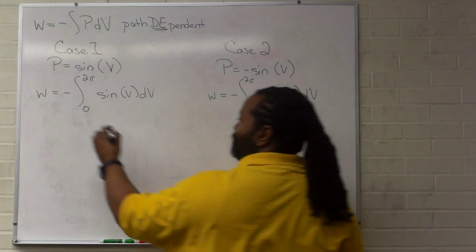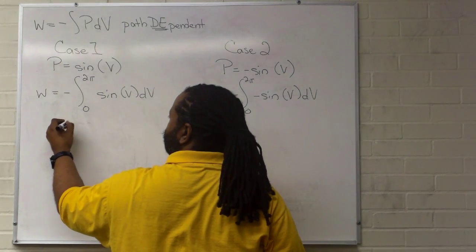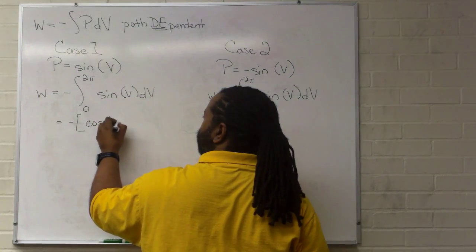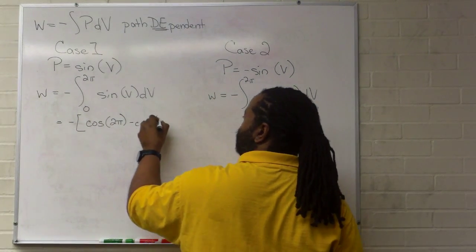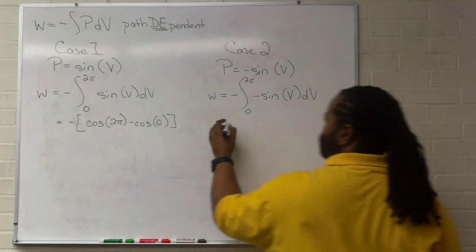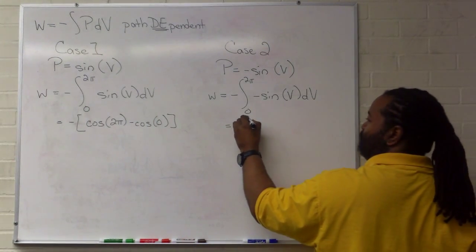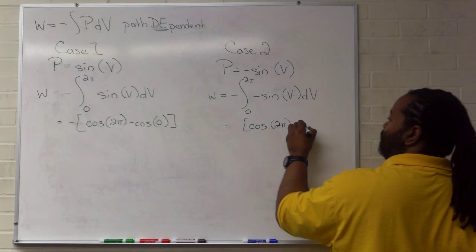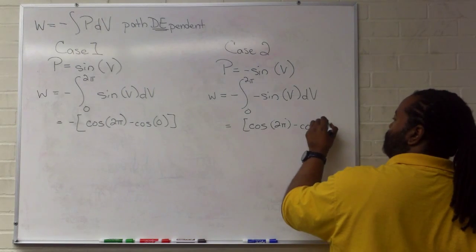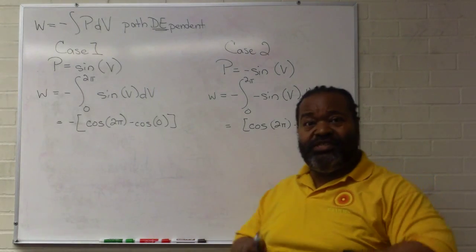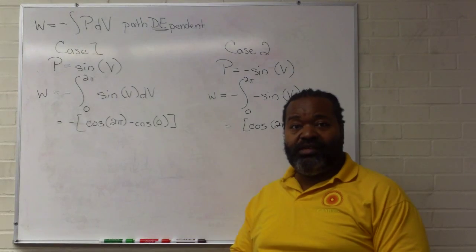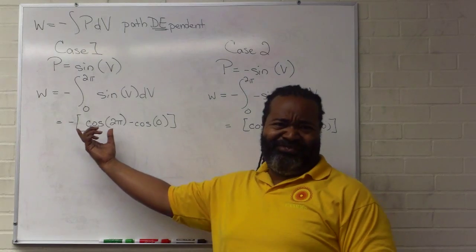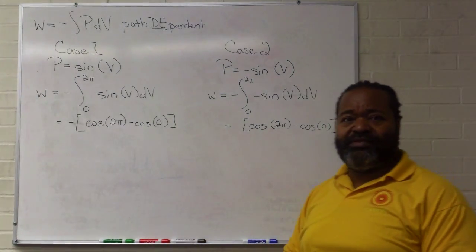You can take out your calculus and follow along. Essentially what we'll have is negative cosine of two pi minus cosine of zero, versus the two negatives canceling, giving us cosine of two pi minus cosine of zero. In both cases the math gives us negative of one minus one, which is zero, compared to one minus one, which is also zero.